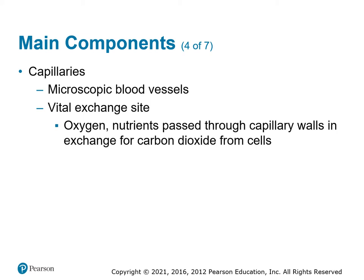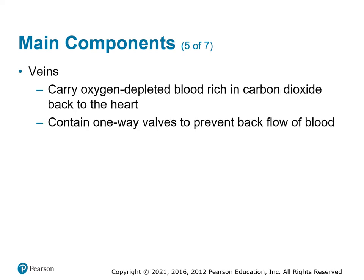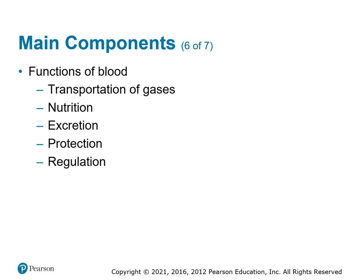Capillaries are the microscopic blood vessels at the cellular level that enable gas exchange and nutrient exchange — very thin-walled, allowing substances to easily pass into cells. Veins bring blood back from the end organs; along the way, the kidneys and liver remove byproducts, and the lungs drop off carbon dioxide. The venous system is lower pressure, so it has one-way valves to prevent backflow and keep blood moving in the right direction.